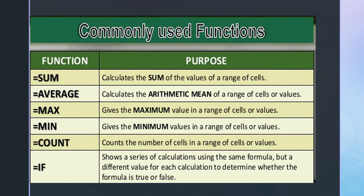Commonly used functions: First, =SUM — calculates the sum of values in a range of cells. Second, =AVERAGE — calculates the arithmetic mean of a range of cells or values. Third, =MAX — gives the maximum value in a range. Fourth, =MIN — gives the minimum value in a range of cells or values. Fifth, =COUNT — counts the number of cells in a range. And last, =IF — shows a series of calculations using the same formula but a different value for each calculation, to determine whether the formula is true or false.